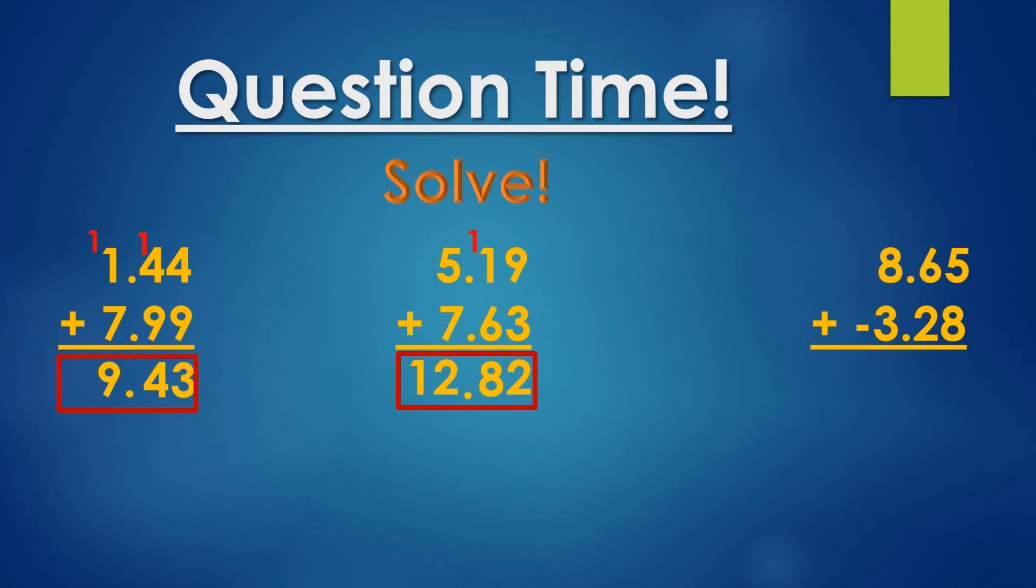And now our final question, 8.65 plus negative 3.28. Now remember that adding a negative is just like subtraction. So what's five minus eight? We have to borrow, that's right. So we're going to borrow from this six here and make it a five, and we'll move the value of 10 over to the five so it makes it 15. And 15 minus eight is seven. Then five minus two is three, and eight minus three is five. And then our decimal falls to the bottom giving us our answer of 5.37.